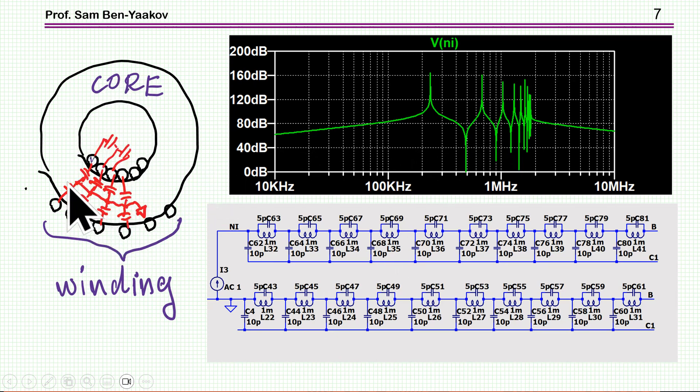And then we have capacitances between the winding, between the wires, and also from the wires to the core. It turns out that these are not insignificant.